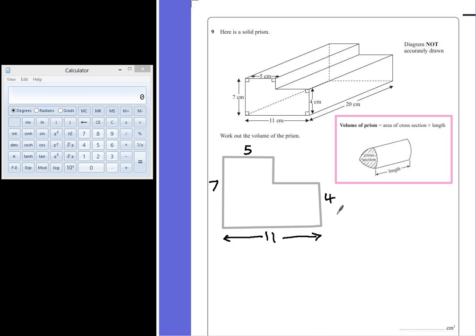To work out the area of a compound shape like this, which is made from two or more shapes put together, we're going to split this into two different rectangles.